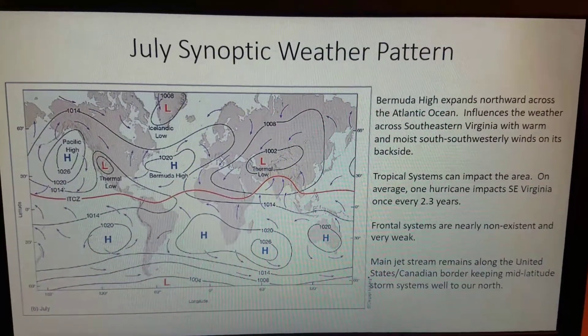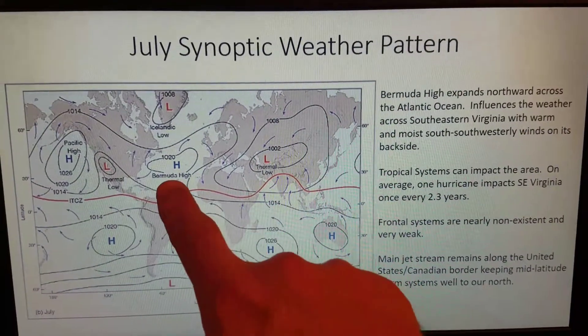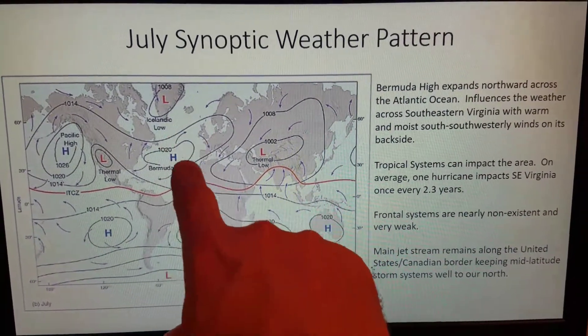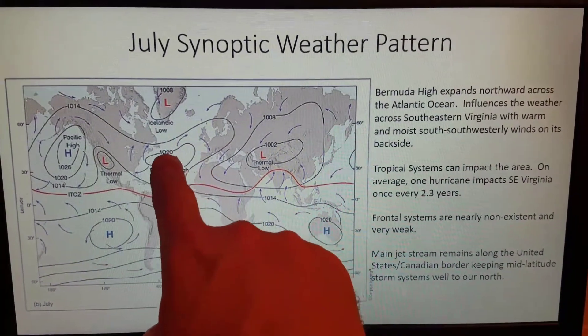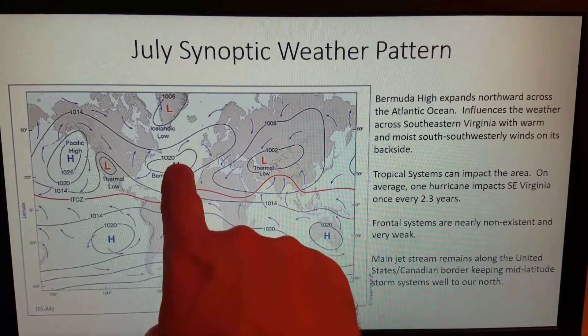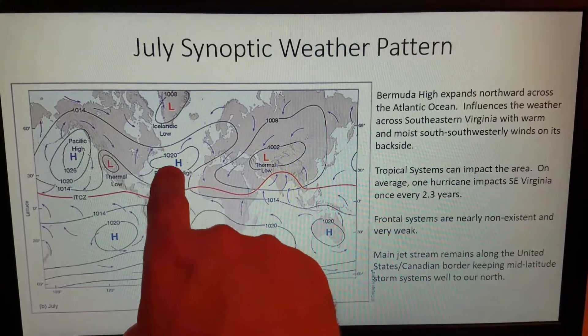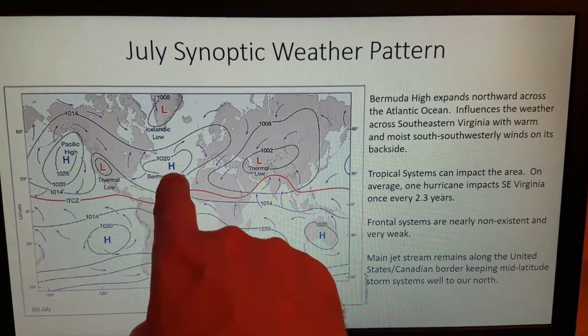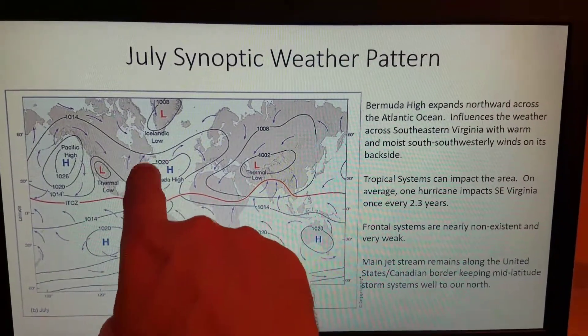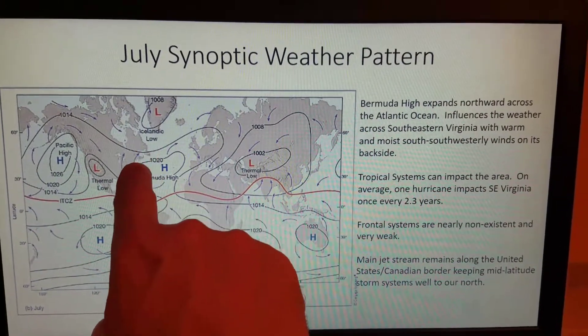For the synoptic weather pattern, what we typically have is a Bermuda High Pressure System, a strong subtropical high which reaches its northernmost point in the Atlantic Ocean and the clockwise flow around this high pressure system generally gives us more of a southerly, southwesterly wind flow into southeast Virginia.